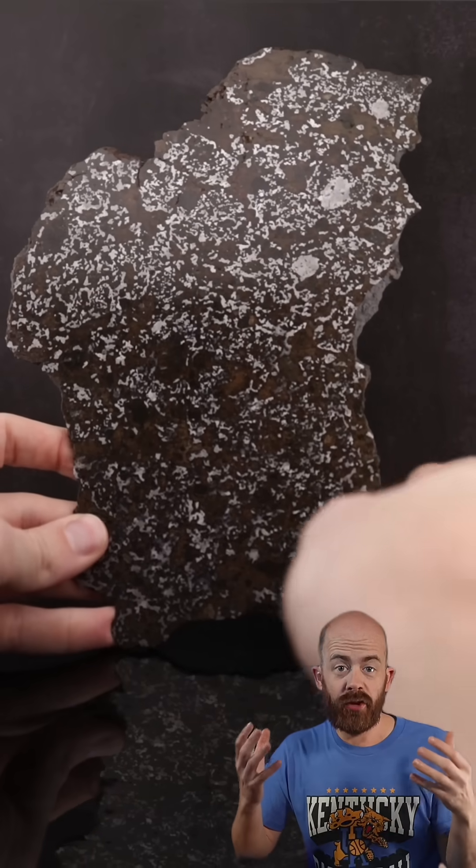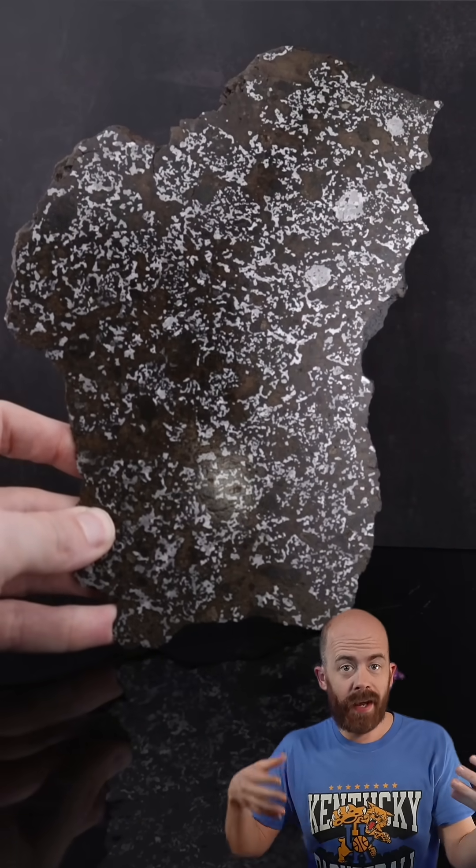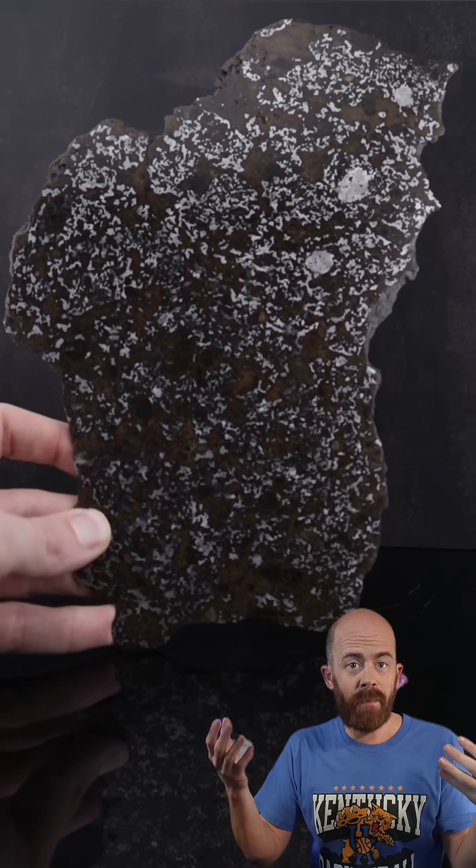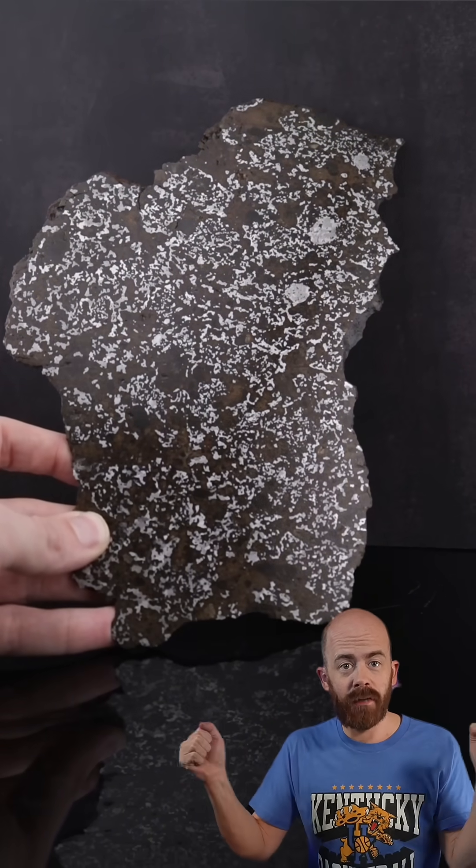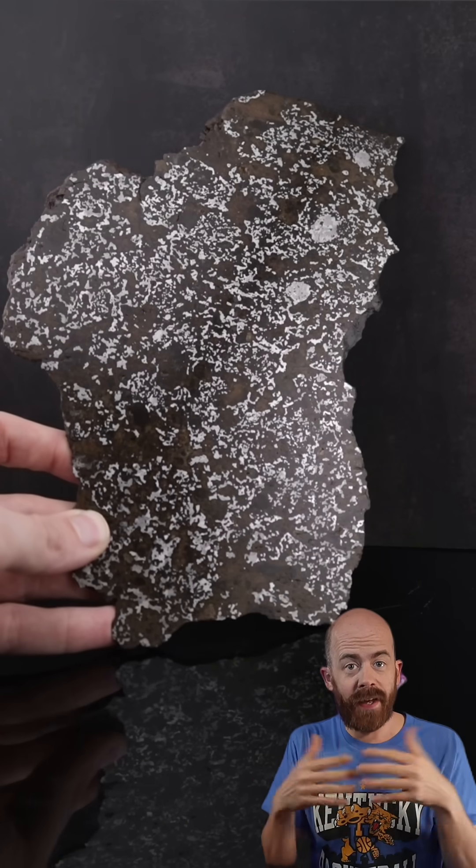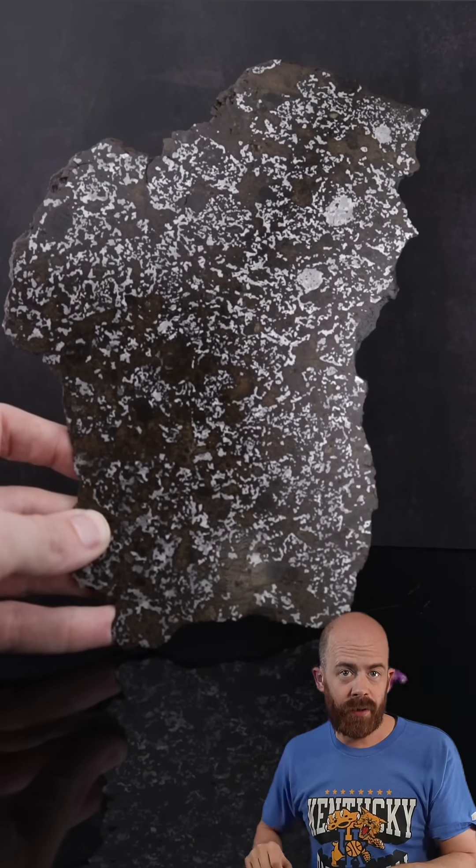So I want you to imagine you've got two asteroids flying out there in space. One of them is more silicates, it's more rock. You have another one that is more metal, we're talking about iron and nickel. These things are just minding their own business, then all of a sudden, smash. They come together, and that is how we believe we get mesociderite meteorites like the one I'm showing you here.